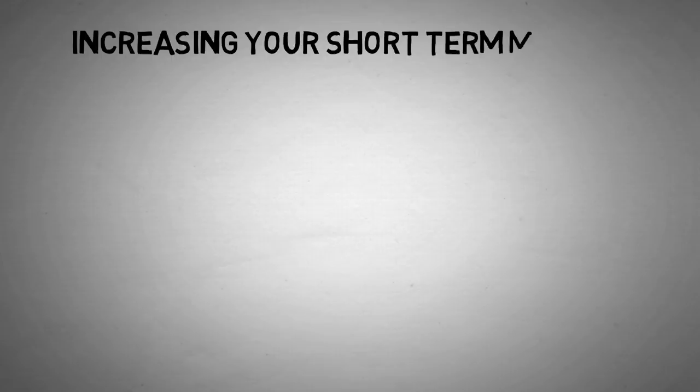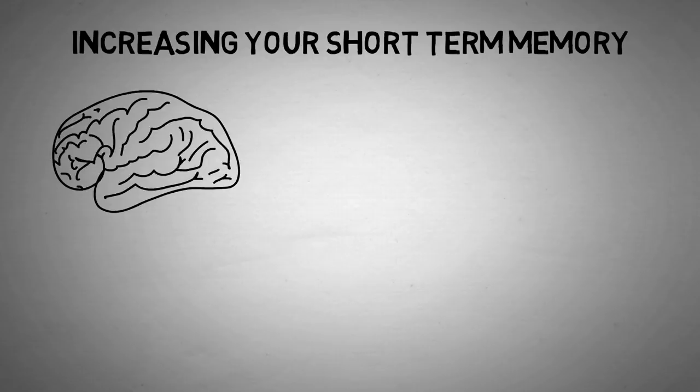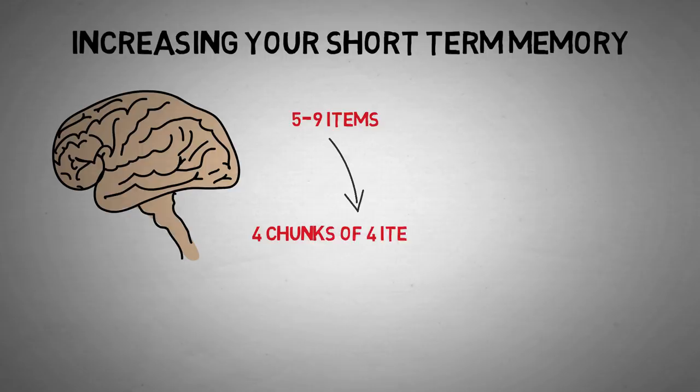So moving on, after simply relearning information, how else can we remember things more often? How can we make better use of our short-term memory? Well, we can use something called chunking. You now know that short-term memory storage is limited. The brain can only keep five to nine items in your short-term memory at a time, but there is a way to hack this limit and retain a little bit more information in your short-term memory for just a longer period of time. And this hack is called chunking.